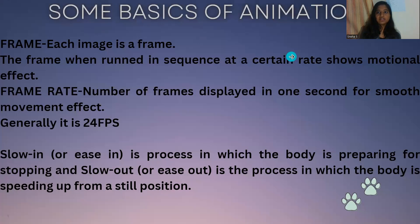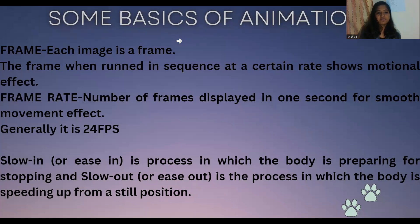Here are some basics of animation. Frame — each individual image is called a frame. The frame, when run in sequence at a certain rate, shows us some emotional effect. Frame rate is the number of frames displayed in one second for a smooth movement effect; generally it is 24 frames per second. Slow in is a process in which the body is preparing for stopping, and slow out is a process in which the body is speeding up from the still position. All these terms will be used in the odd rule.